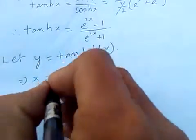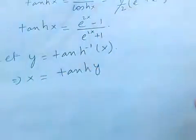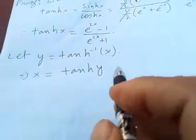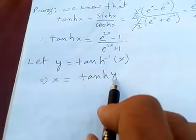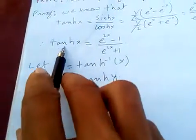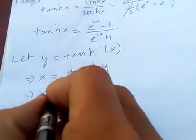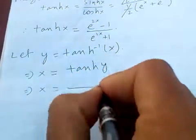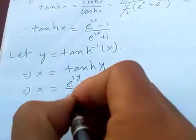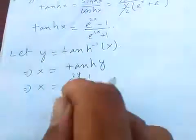So x is equal to tanh of y. Since tanh of y equals e to the 2y minus 1 over e to the 2y plus 1, we have x equal to e to the 2y minus 1 by e to the 2y plus 1.